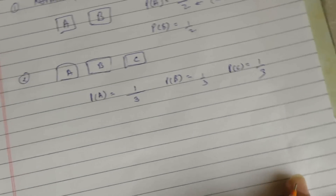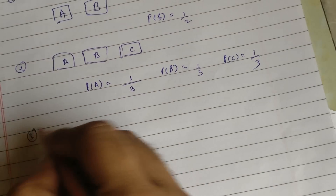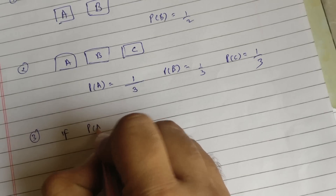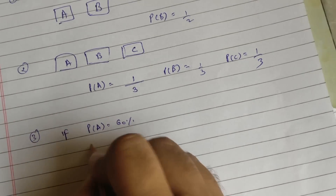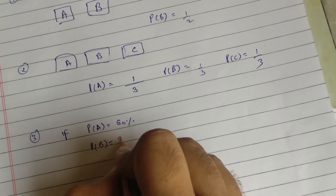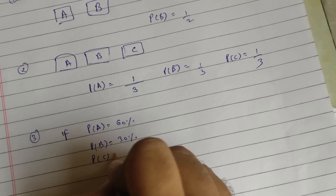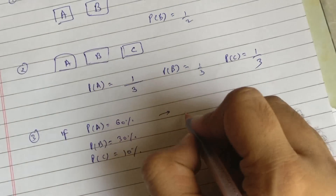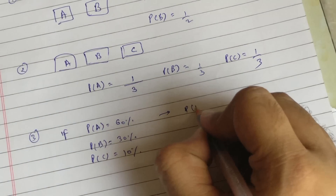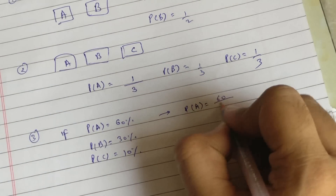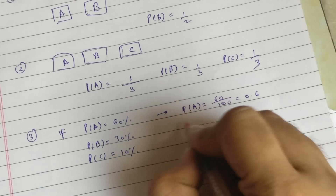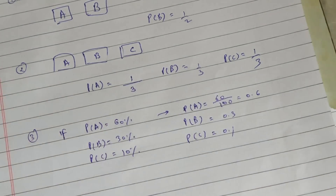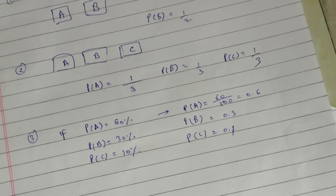What if the question gives the probabilities individually? If P(A) is given as 60%, P(B) as 30%, and P(C) as 10%, you have to convert these percentages into fractions: P(A) = 0.6, P(B) = 0.3, and P(C) = 0.1. So now you know the first step — finding the normal probabilities.